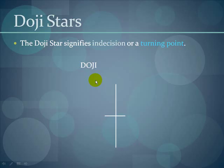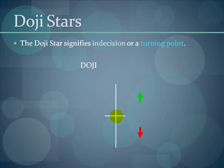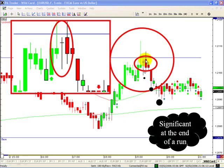The doji star signifies indecision or a turning point. A doji means the candlestick opened, went all the way down, went all the way up, and closed exactly at its opening — so it is undecided whether it's a bull or bear candle. It's a potential turning point, and very significant at the end of a run. We've been buying up, then a doji appears showing indecision, and then red candles come in as the sell-off takes place.